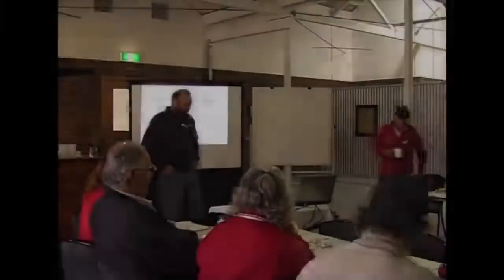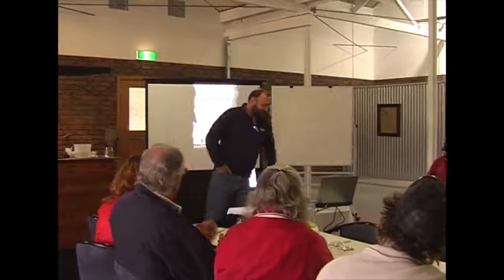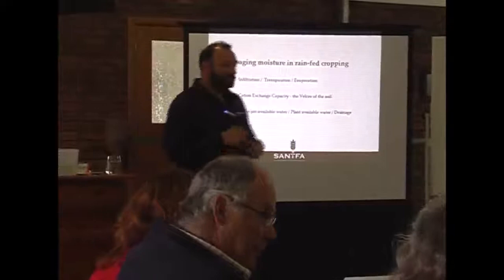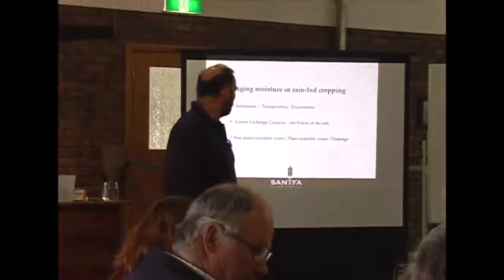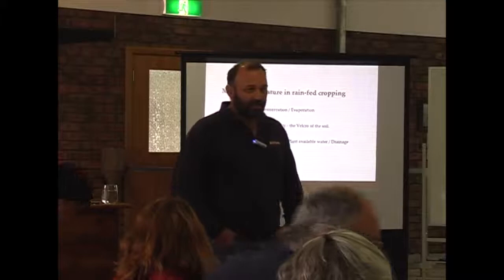What I'm going to talk about is managing moisture and what we're doing in our system in a changing climate. The sorts of things I'm going to cover are infiltration — water going into the soil — transpiration — water coming out through the plant — evaporation — water coming out but not through the plant — and cation exchange capacity. Cation exchange capacity is a very poorly understood measure generally, but I want to explain what it really means and how we can use it to understand our systems.